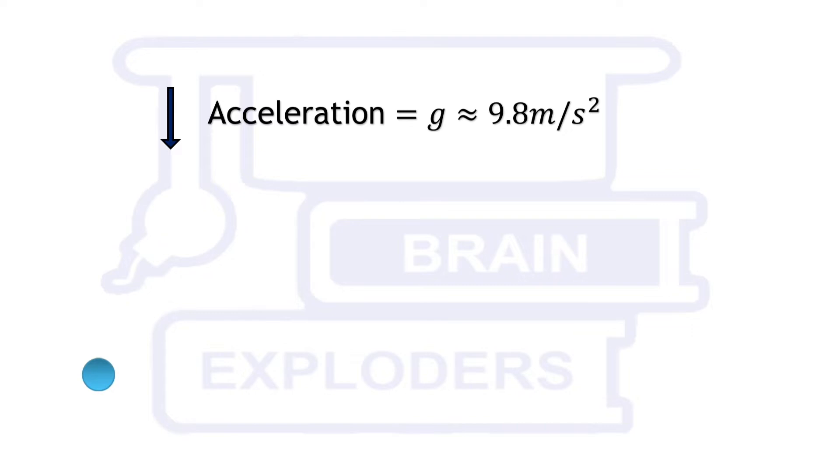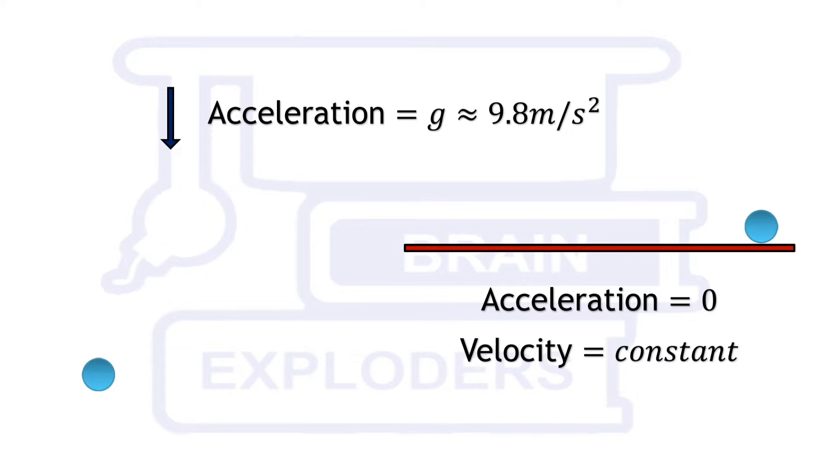On the other hand, if an object is moving on a frictionless horizontal plane, then its velocity is constant but acceleration is equal to zero because there is no motion in the direction of gravitational force.